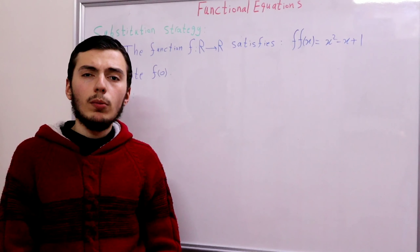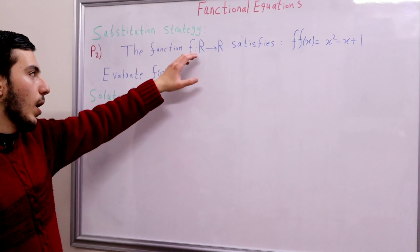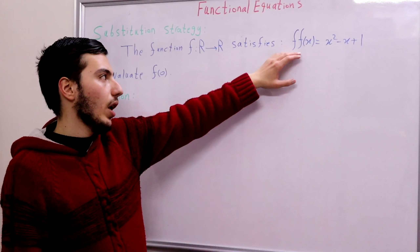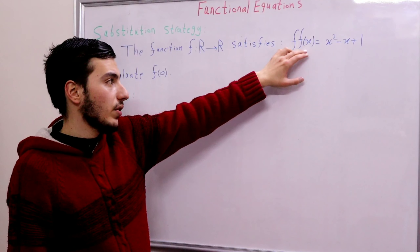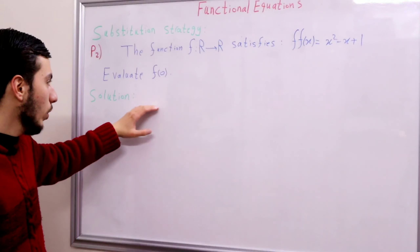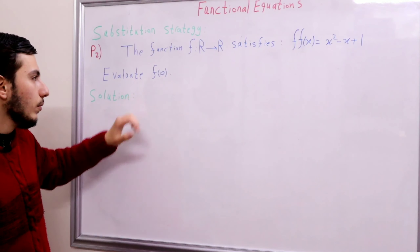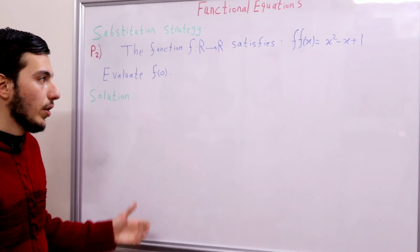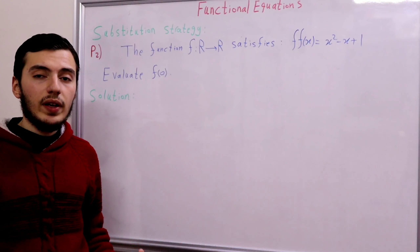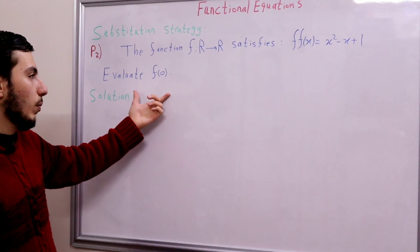So the problem statement is the following. The function f from ℝ to ℝ satisfies the relation f(f(x)) = x² - x + 1. And we are asked to evaluate the value of f(0). So what we need to do right here is just evaluate the simple value of f(0). That sounds simple.